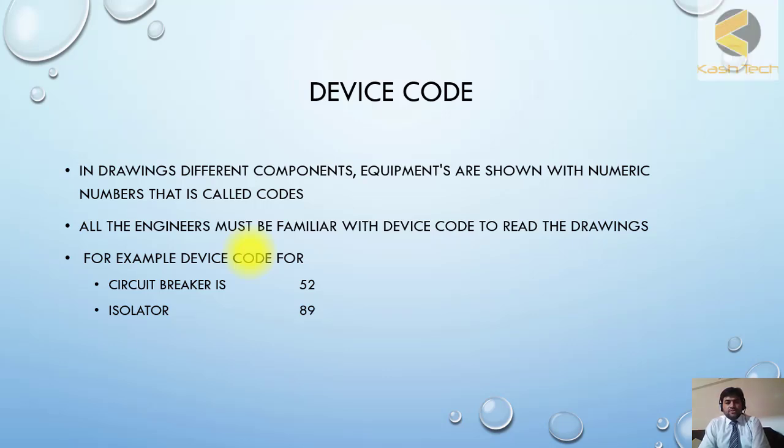For example, circuit breaker is shown with device code 52, and isolator is shown with device code 89. Each and every device has its own codes.